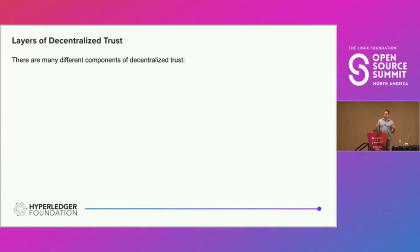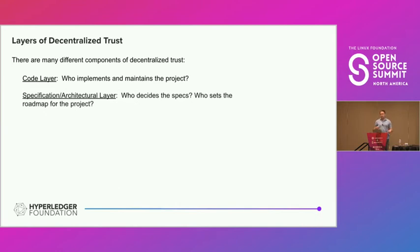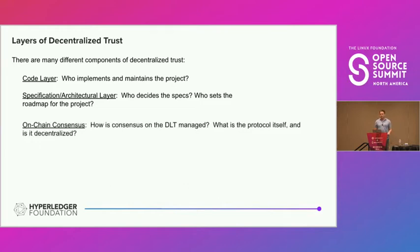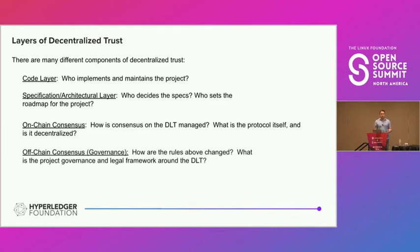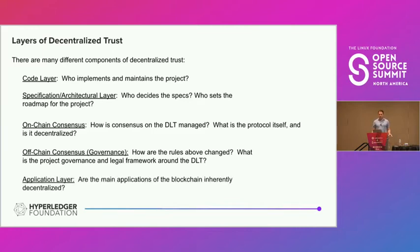If we think about decentralized trust, there are many different components. There's the code layer — who implements and maintains the project. There's the architecture and specification layer — who decides the specs and sets the roadmap. There's the on-chain consensus layer. There's the governance of the ledger — the legal framework around it. And finally there's the application layer — all is for naught if your application is not actually decentralized.